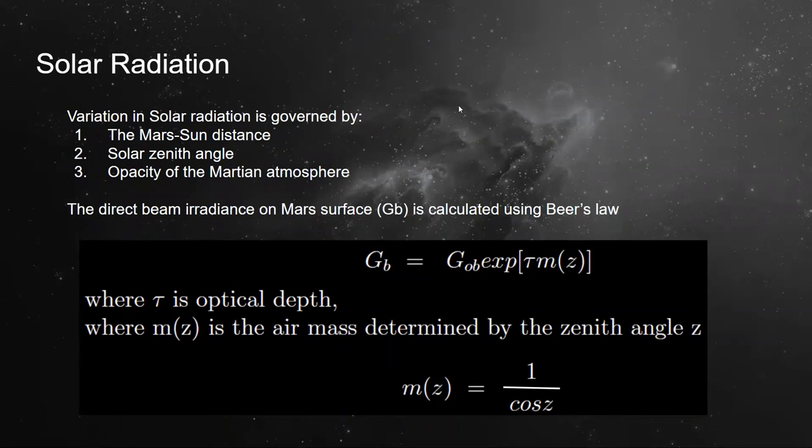Three different factors that affect are the Mars-Sun distance, solar zenith angle, and the opacity of the Martian atmosphere.